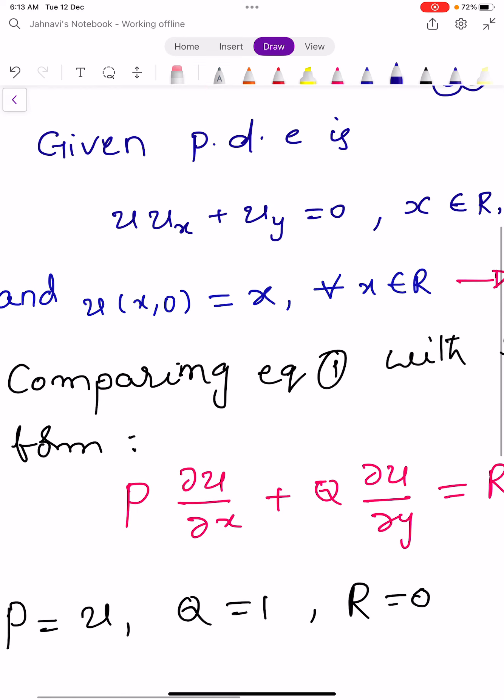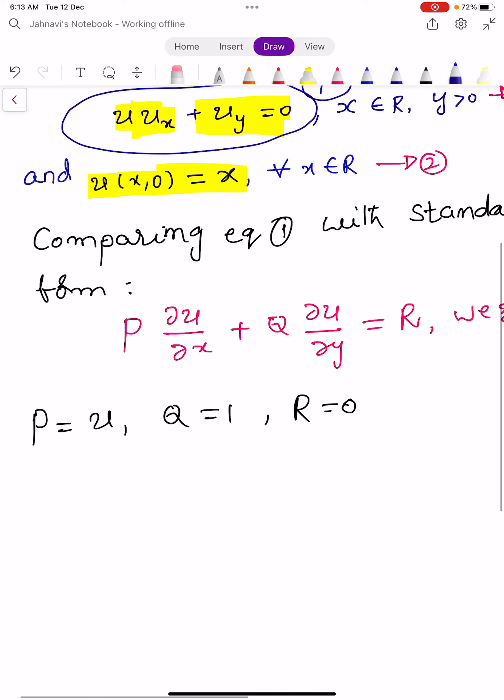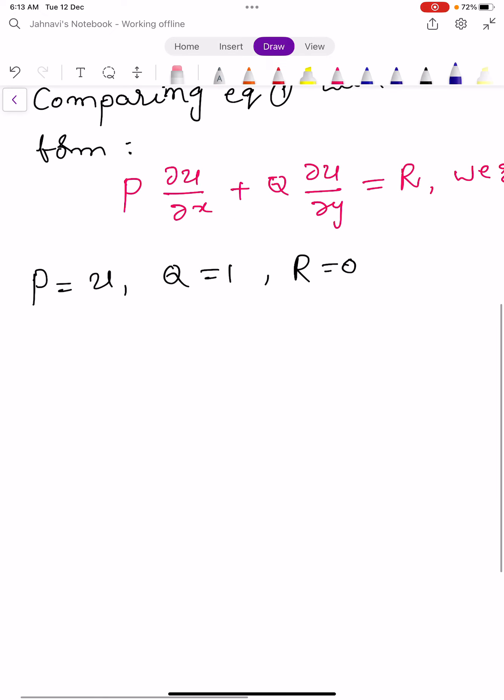Let us see the solution. The given partial differential equation is u*ux + uy = 0 and boundary condition is u(x,0) = x. Let it be equation number 1. Comparing equation 1 with standard form P*(∂u/∂x) + Q*(∂u/∂y) = R, we get P = u, Q = 1, and R = 0.